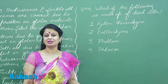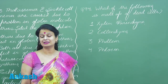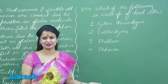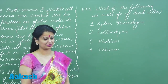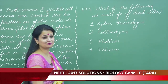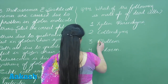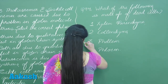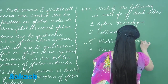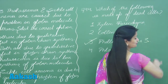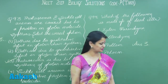Phelum — also known as the corky layer — is thick, suberized, and dead at maturity. Phloem is again a living tissue. So the dead tissue is represented by phelum, that is the cork cells. The right option for this question is option number 3.